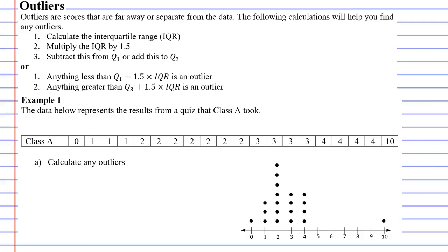So we're going to look at outliers and we have an example here with some data. The data below represents the results from a quiz that class A took. So here's our data here. What you'll notice is most of the students got between 0 and 4 marks out of 10 and then you've got the student who got a perfect 10 out of 10. And you can see it better when you look at the dot plot. We can see all these students grouped together and then there's the student who's far away or separate from the other data.